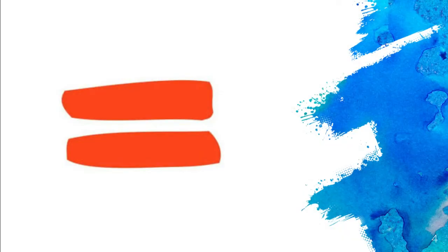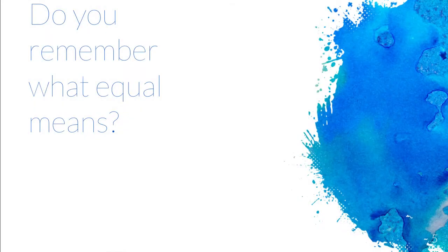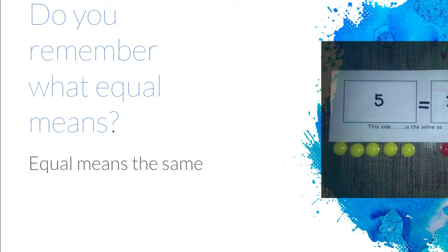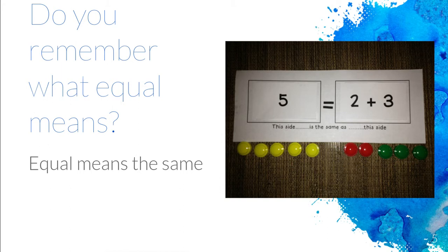Do you remember what this is? This is an equal sign. Do you remember what equal means? Equal means the same. So if you look at our picture, five is equal to two plus three. And if you look at the red dots and the green dots and you count all of those together, they equal five, the same as the yellow dots.